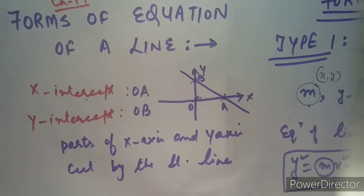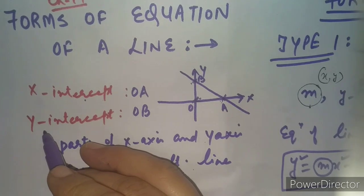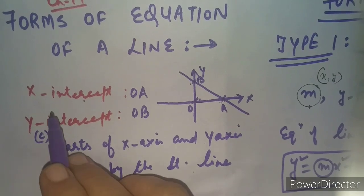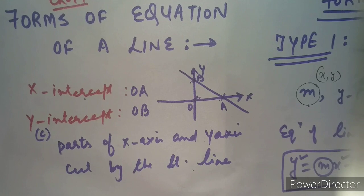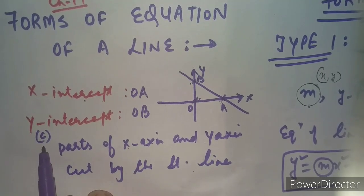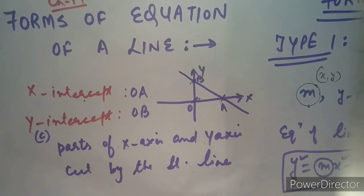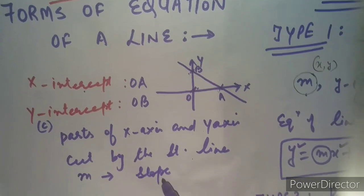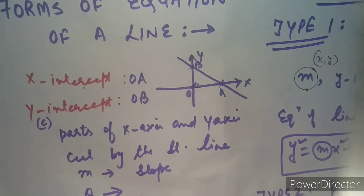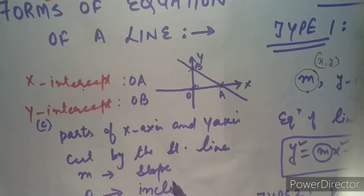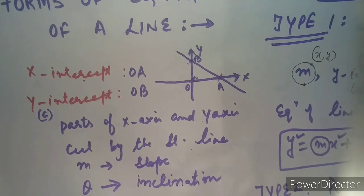Now, in the further forms of equation of a line, we will always denote the y-intercept by the small letter c — remember, small c. There is no particular notation used for x-intercept, but especially for y-intercept, small c is the symbol used. You already know that small m is the symbol used for slope. One more important symbol used in these questions is theta, which is the angle of inclination. So these symbols remain as they are for the further parts of this chapter.